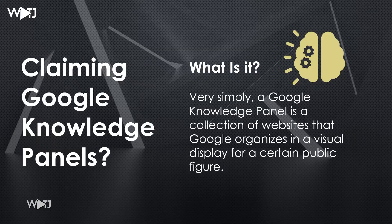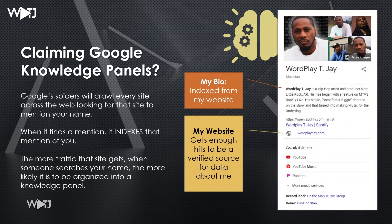So what are they? A Google Knowledge Panel is a collection of websites that Google organizes in a visual display for a certain public figure. I happen to have a Google Knowledge Panel and it is set up all the way. Google's spiders crawl every site across the web looking for a site that mentions your name. When it finds that metadata it indexes it, and then they take every mention of you and put it together. The more traffic the site gets that's relevant to the search, the more likely you are to get a Google Knowledge Panel.